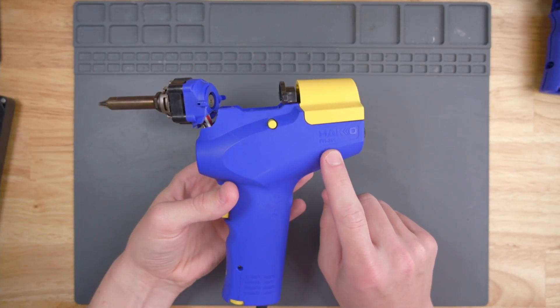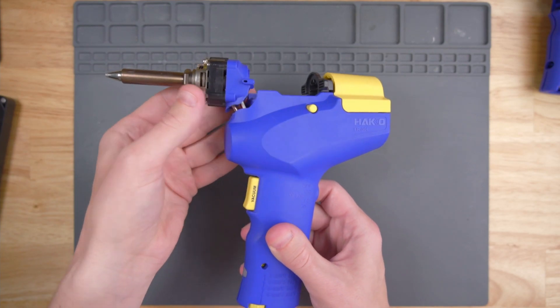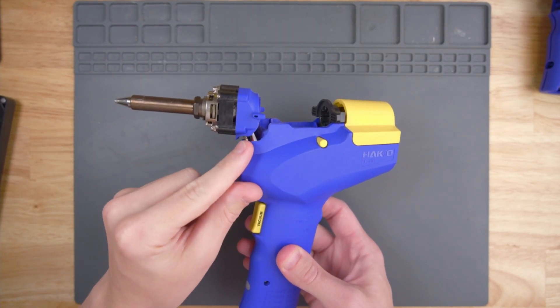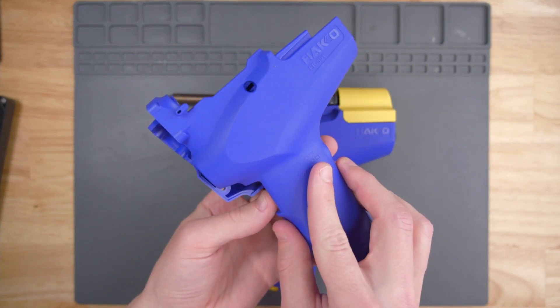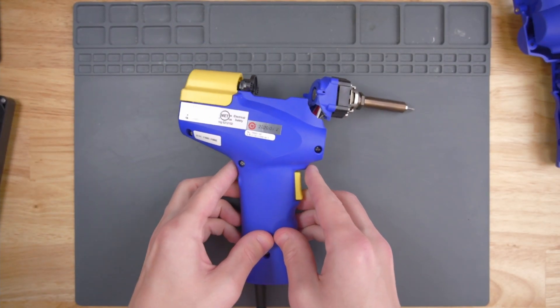I accidentally dropped my Hakko FR-301 off my table and it's got this big break up here by the heating element. At first I thought I was going to have to buy a whole new one just for this broken plastic shell, but thankfully Hakko makes replacement shells for the FR-301. I thought I would make a quick video about replacing the shell.